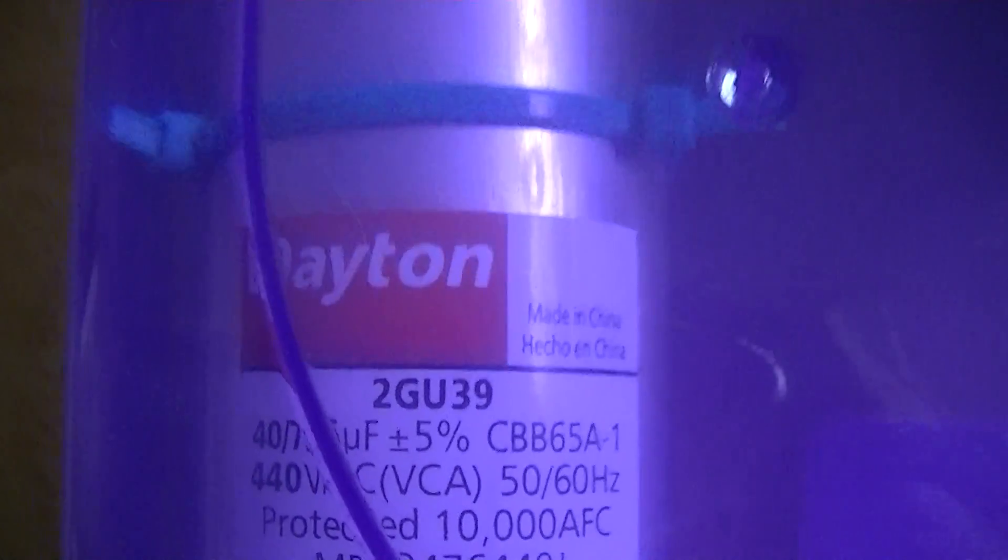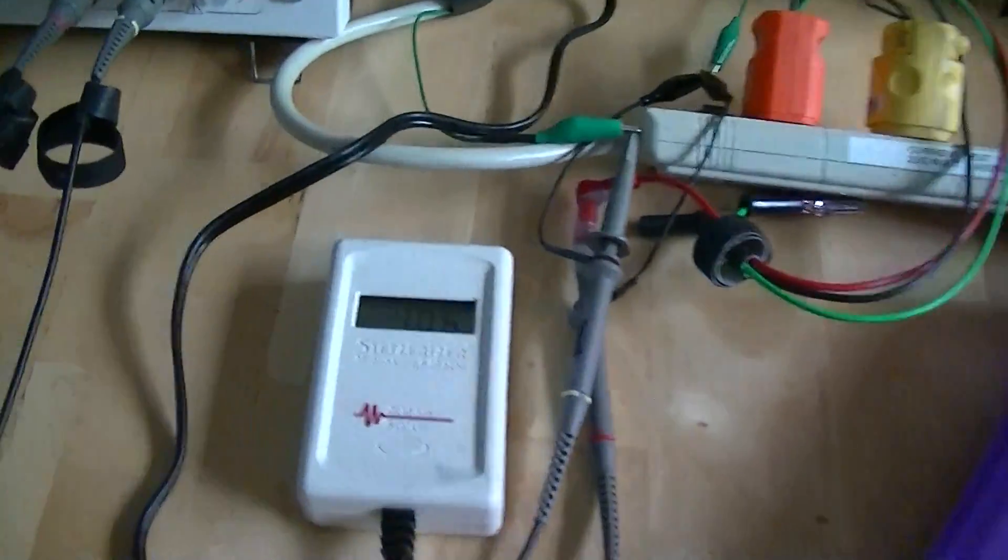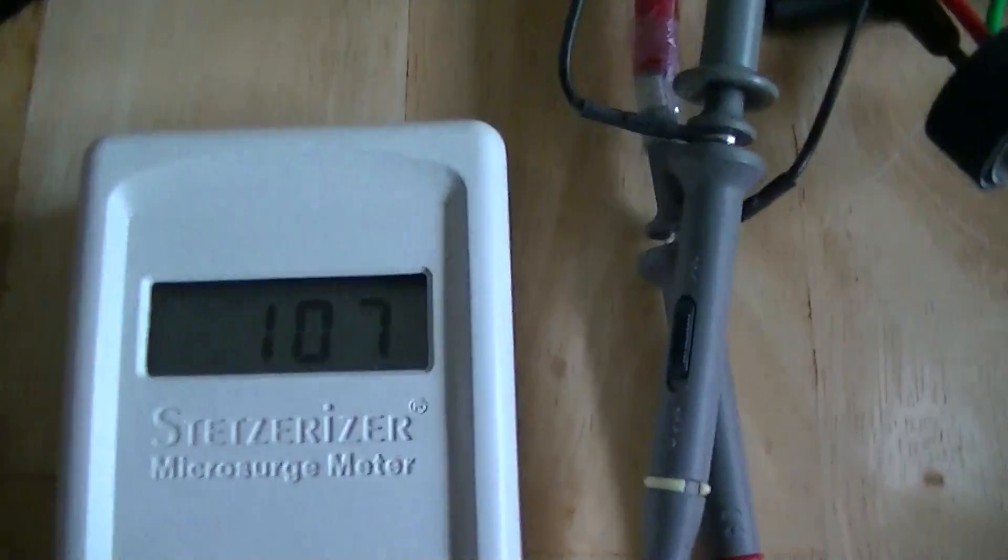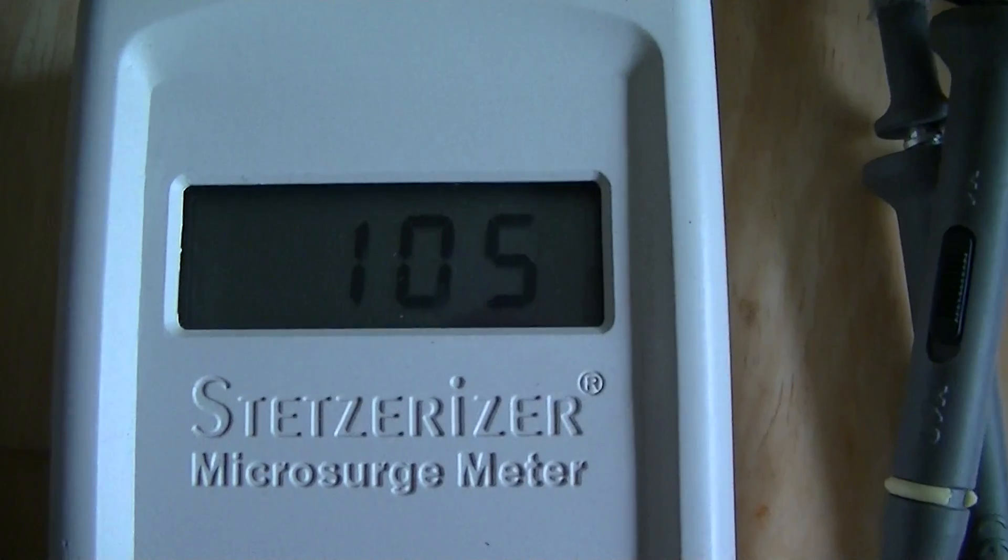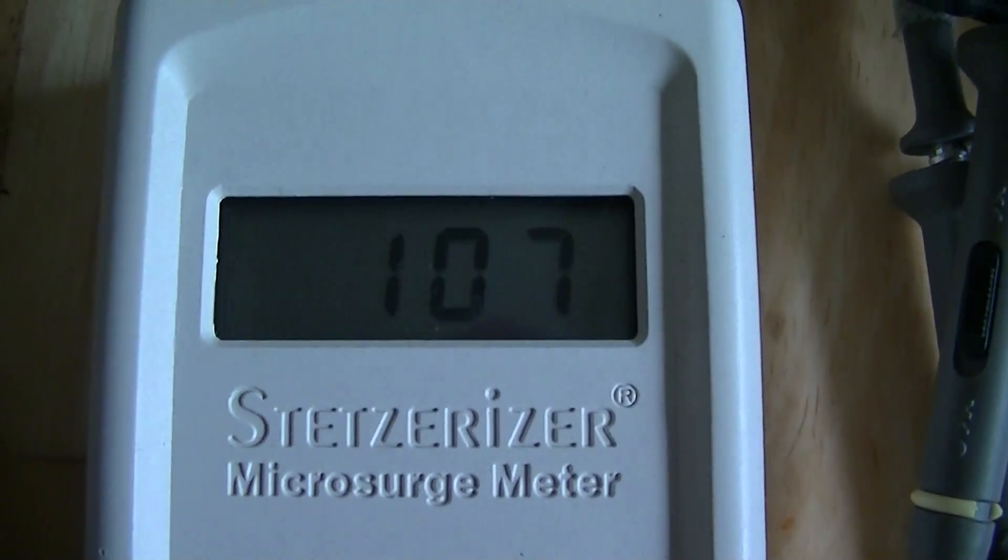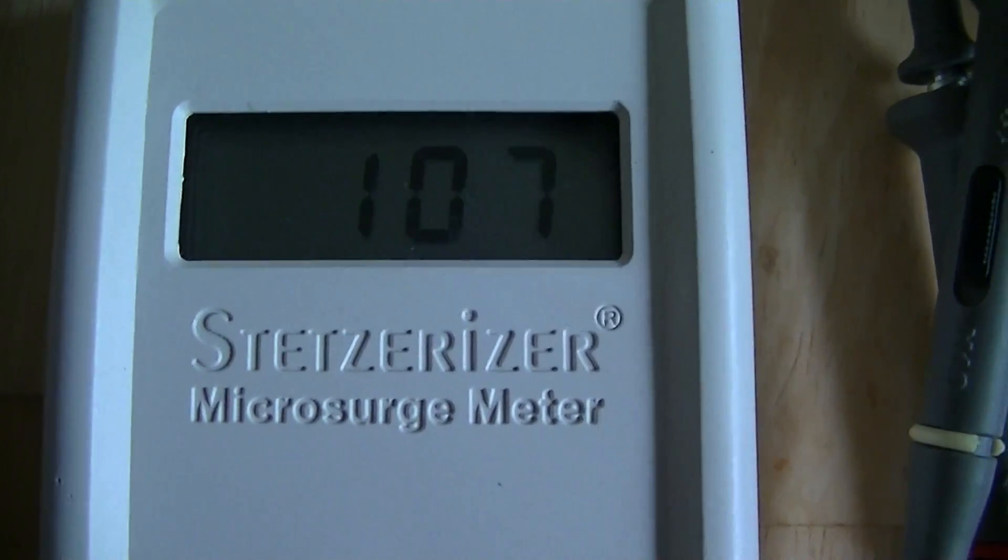How that affects the current and the dirty electricity that they produce. Capacitors are commonly used in the field of dirty electricity to try and calm down the levels. We're going to use this Stetzerizer microsurge meter which has become the standardized meter in the industry for measuring dirty electricity.